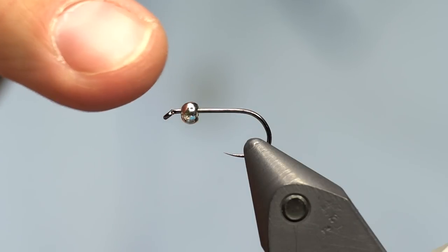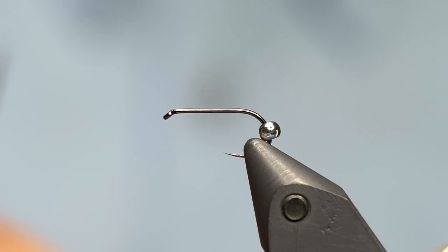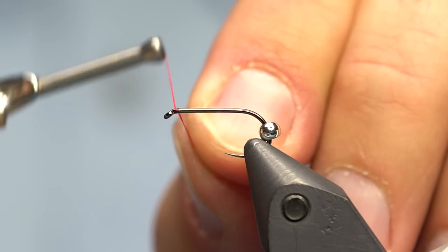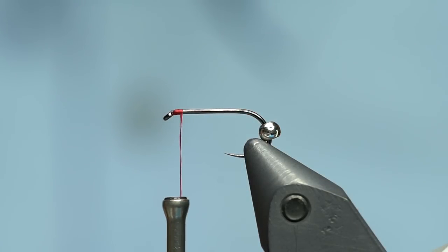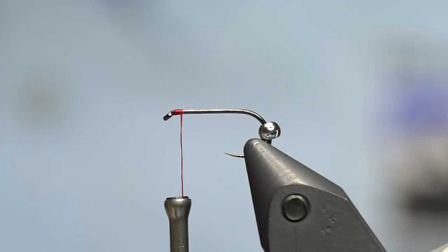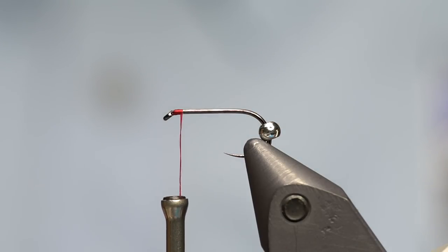First thing I'm going to do is slide the bead on the hook and then back to the bend of the hook. Then I'll start the thread right at the eye and use as few wraps as possible. We're going to tie in a little bit of yarn for some gills.